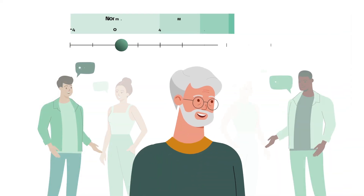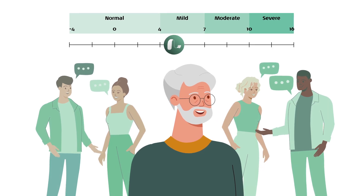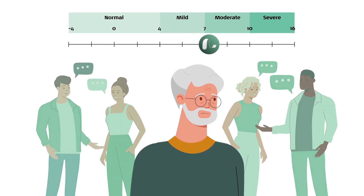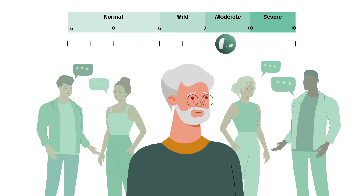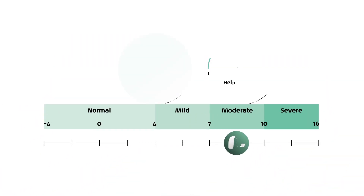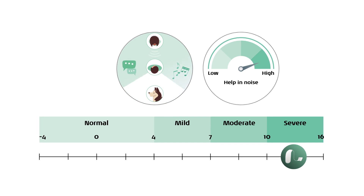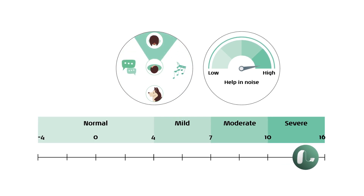The lower the ACT value, the better the patient will be able to hear speech in noise, whereas those with a higher ACT value will have more difficulty hearing in noise. This means that patients with higher ACT values will require more from their adaptive hearing aid features than those with lower ACT values.